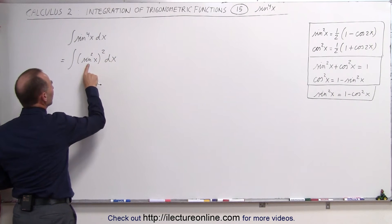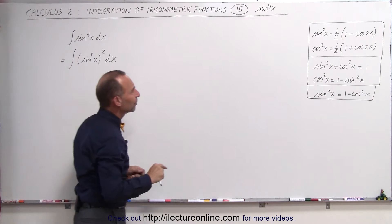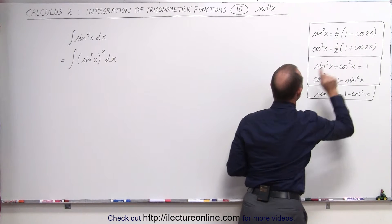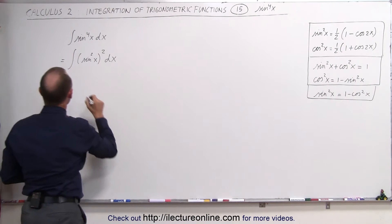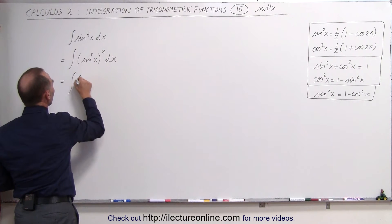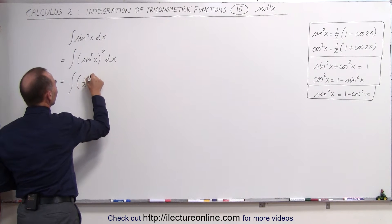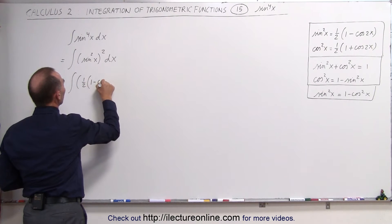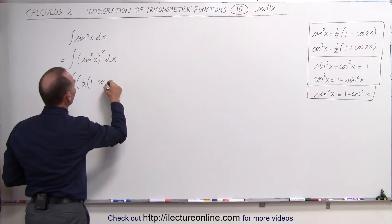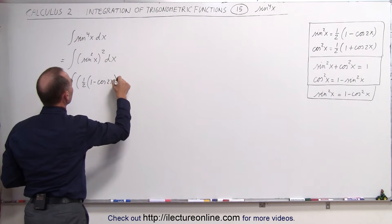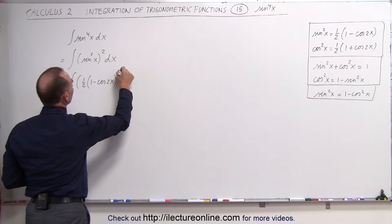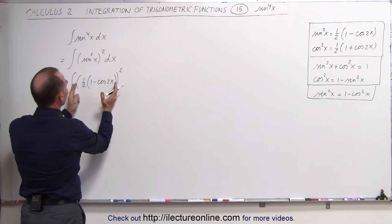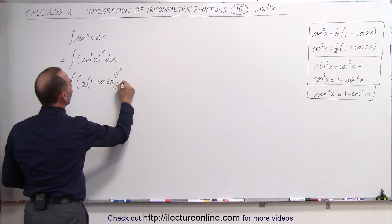Now what we can do here is take this and find the proper identity. The sine squared of x can be written using a known identity, so let's make that substitution. This can now be written as the integral of one half times 1 minus the cosine of 2x, and the whole thing squared, because we still have this quantity squared, times dx.